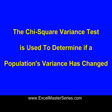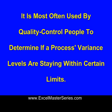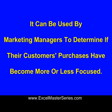The Chi-Square Variance Test is used to determine if a population's variance has changed. It's most often used by quality control people to determine if a production process's variance levels are staying within certain tolerance limits, and it's often used by marketing managers to determine if their customer's purchasing habits have become more or less focused.